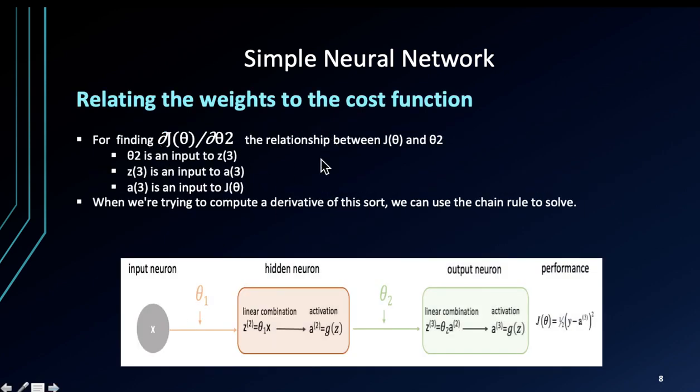In order to find the relationship between weights and cost function, we have theta 2 which is an input to z3. Z3 is an input to a3, and a3 is an input to j theta. When we're trying to compute a derivative of this sort, we can use the chain rule to solve. I'm not going to discuss the chain rule because frankly this is a mathematical detail that you don't need to know. I'm just acquainting you with the terms, and all of these are built into PyTorch and other deep learning modules.